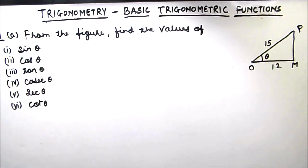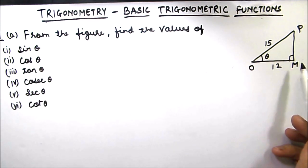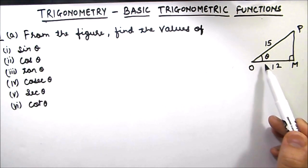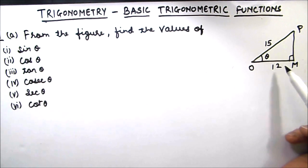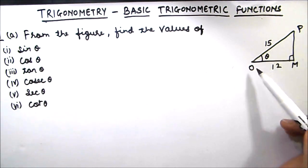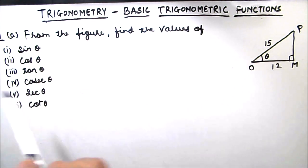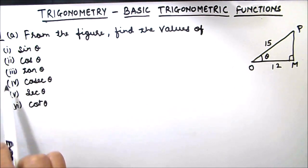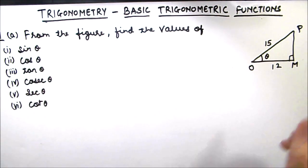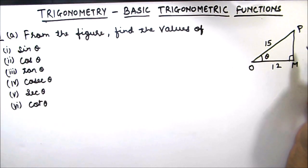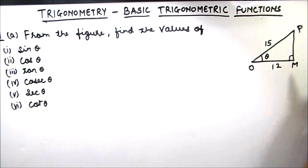In this example, a right triangle has been given with a base angle of theta. We have been given the length of the hypotenuse and base of the triangle, and we need to find all the trigonometric ratios. First of all, to find the value of all the ratios, we need to find the third side, which is the length of the perpendicular of this triangle.